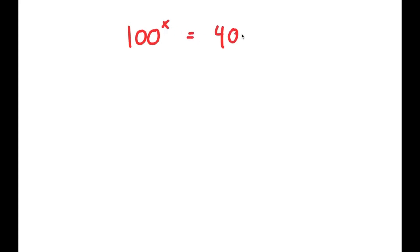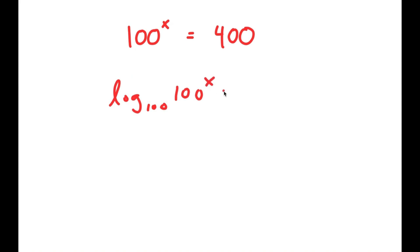In this video, I'm going to solve the equation 100 to the power of x is equal to 400. To solve this, I'm going to first start by taking the log of base 100 on both sides. So I get log base 100 of 100 to the power of x is equal to log base 100 of 400.